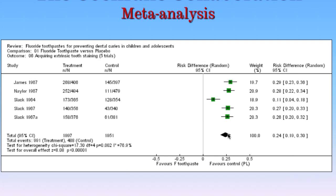Because combining studies increases the size of your sample, it increases your generalizability. You're more confident that, in this case, those who received the intervention of fluoride toothpaste had a higher chance of extrinsic tooth staining than the control group, and this forest plot shows it quite nicely. You can see that the risk difference — a slightly different measurement to the odds ratio — is over to the right, which favours the control rather than the toothpaste.